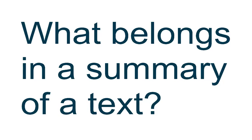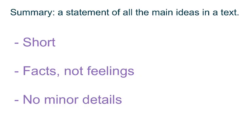What belongs in a summary of a text? A summary is a statement of all the main ideas in a text. It's short, it only includes facts, not your feelings or opinions, and it does not include minor details, only the important stuff.